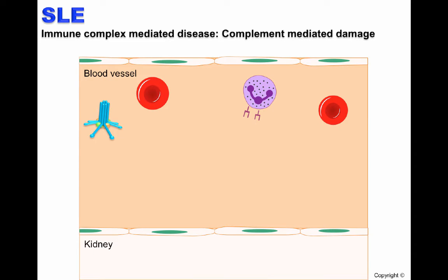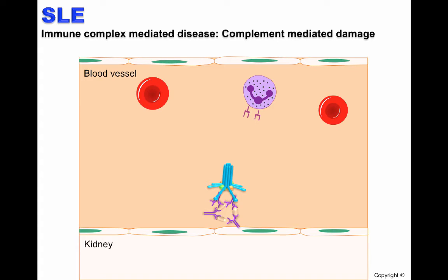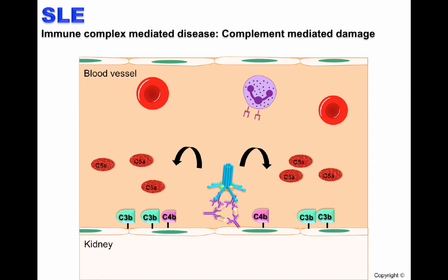Now let's look at how complement-mediated damage occurs. Same as before, the immune complex is deposited. C1Q comes in and binds to the FC portion of the antibody. As shown in previous videos, the classical pathway activation takes place, leading to C4B and C3B deposition — an amplification process that leads to production of C5A, a potent chemoattractant and activator of immune cells, and formation of the membrane attack complex. Overall, activation of the complement pathway leads to tissue damage and lupus nephritis.